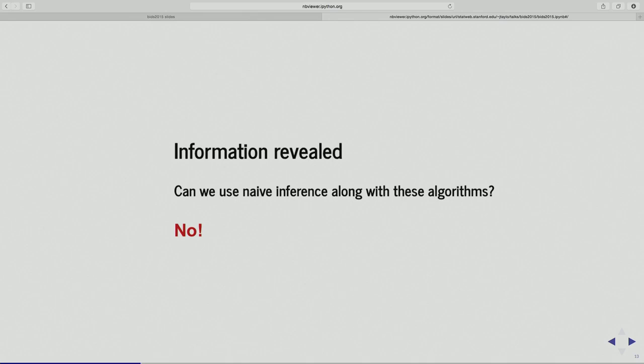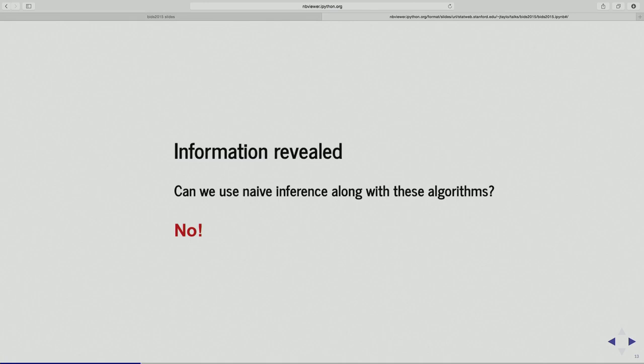I hope you'll agree that when we look at this information from the dataset, we can't just use naive inference along with these algorithms. What do I mean by naive inference? Once I've chosen a subset of variables with the lasso or something like that, that's a usual regression model. I could use any statistical software to fit regression models that would report a p-value or a confidence interval for those coefficients. But will that have any statistical validity? Generally speaking, no.